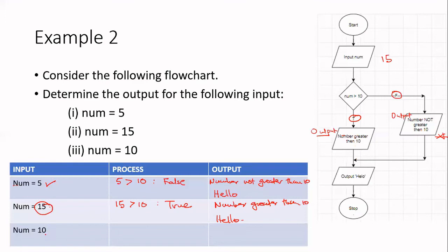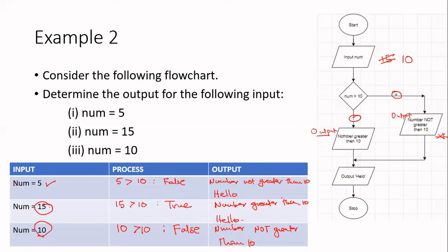The third value we're testing is num equals 10. Input num, value of num is 10. Let's test the condition: is 10 greater than 10? 10 is not greater than 10 — that's false. So we follow the false branch, and it's going to output 'number not greater than 10'. Note there is a spelling error — it should be 'than' (T-H-A-N). Continuing, it's then going to output hello.